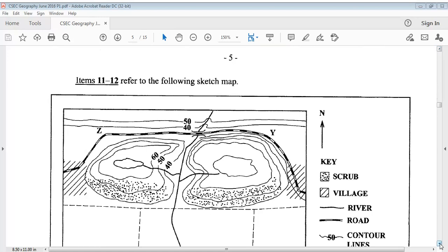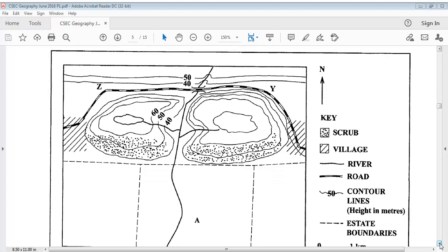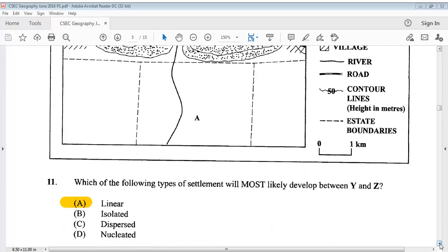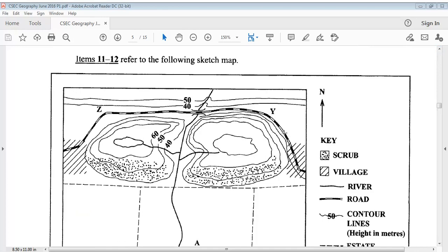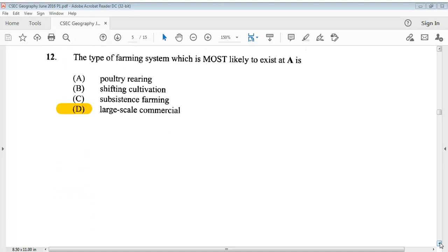Items 11 to 12 refer to the following sketch map. You can take a look again at your sketch map and it tells you what each represents in the key. Question 11 says, which of the following types of settlement will most likely develop between Y and Z? You can always go back and look on your diagram. The answer is A, linear. Question 12 says, the type of farming system which is most likely to exist at A is? D, large scale commercial.